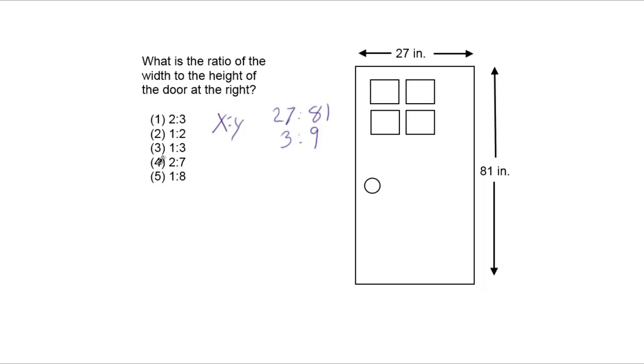Which still isn't on here because we can reduce it even further. Right? Both of these numbers are divisible by 3. 3 divided by 3 is 1, and 9 divided by 3 is 3. So the answer is 1 to 3, the third choice.